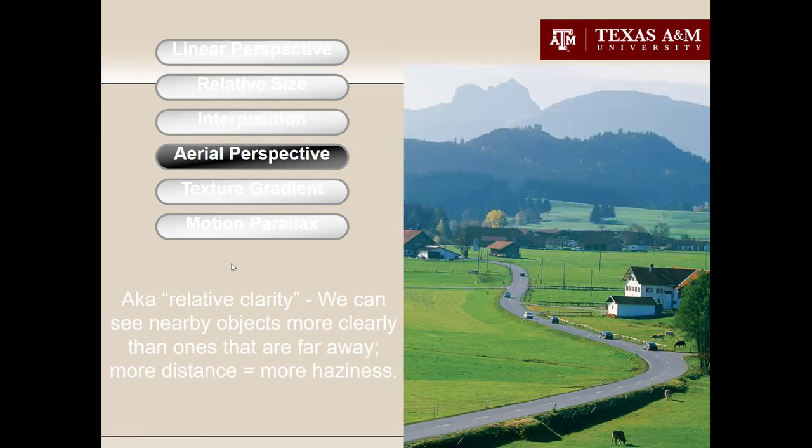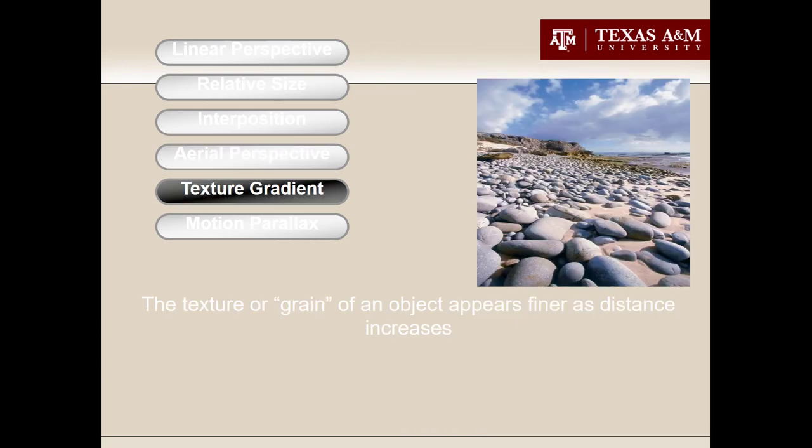Aerial perspective, also known as relative clarity, means your brain judges things that look hazier as farther away — more distance, more haziness. With texture gradient, your brain reasons that things close to you have a coarse texture or grain with lots of detail. As those same kinds of things get farther away, the texture becomes finer and less detailed. Rather than interpreting those finer-grained objects as different objects, your brain interprets that as a distance cue telling you they are simply farther away.